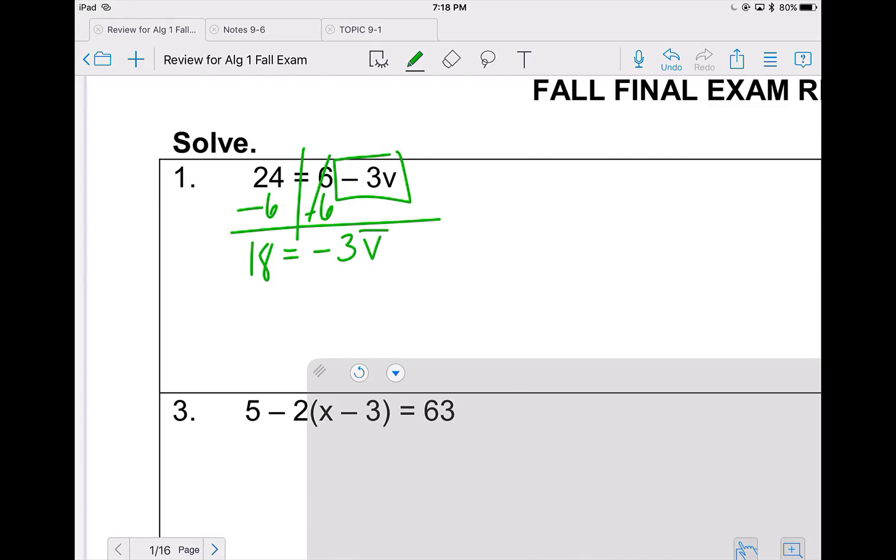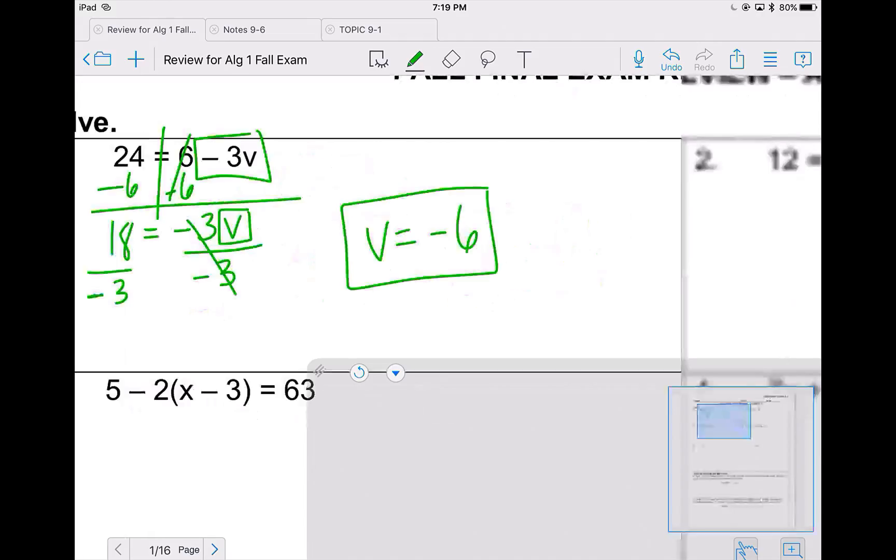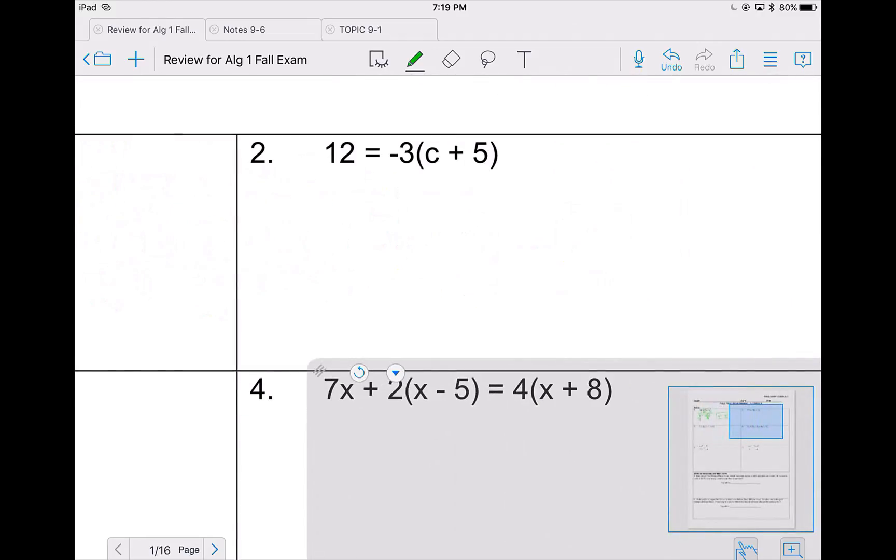Still trying to get v by itself, I need to divide by negative 3. I divide because there's no sign operation in between negative 3 and v, so I can see that is multiplication. And when I divide, I get negative 6. If you wanted to check your work, you could plug in negative 6 here. So 6 minus 3 times negative 6, put that in the calculator and make sure that you get 24.